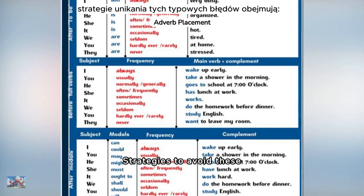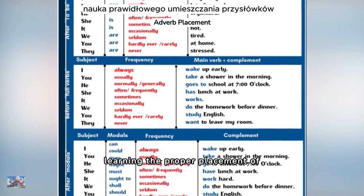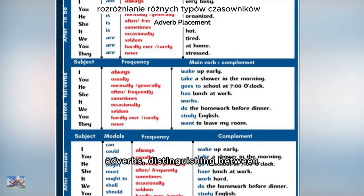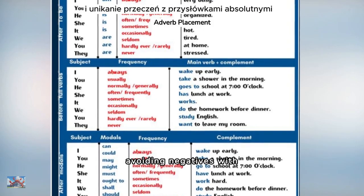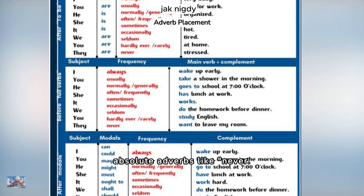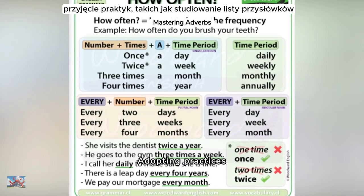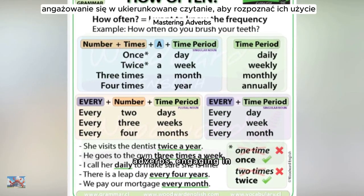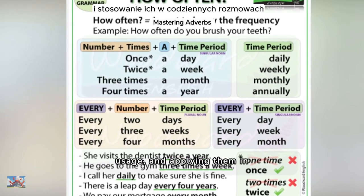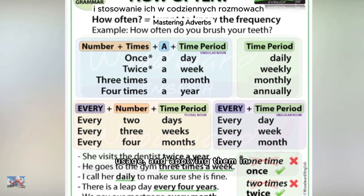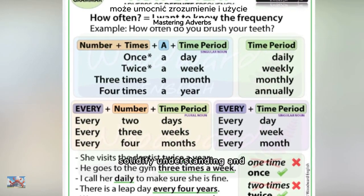Strategies to avoid these common mistakes involve learning the proper placement of adverbs, distinguishing between different types of verbs, and avoiding negatives with absolute adverbs like never. Adopting practices such as studying lists of adverbs, engaging in focused reading to recognize their usage, and applying them in daily conversations can solidify understanding and usage.